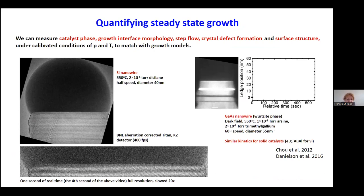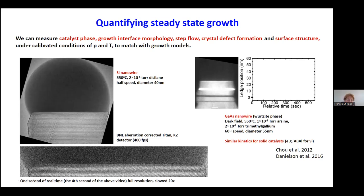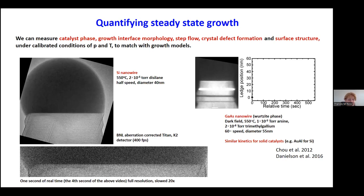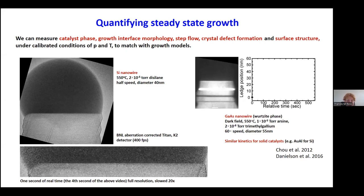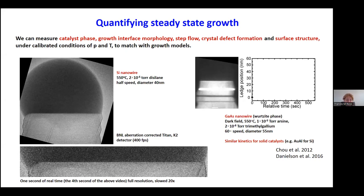At higher resolution, we can measure the catalyst phase, interface morphology, the way growth takes place at the interface, how defects form, and the surface structure. If I show that same movie at higher resolution, you can start to see the really interesting dynamics during silicon nanowire growth. The interface is breathing — there's a gap and then suddenly the addition of an entire sheet of silicon atoms. Blown up, you can see that nothing happens for a while, and then a whole layer adds all at once. That's pretty interesting.